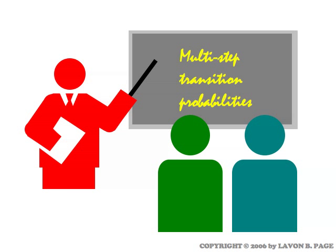So we can have three-step transition probabilities, or four-steps, or ten-step transition probabilities. The basic idea is, if you know where you are at some point, what's the probability you'll be in a certain other state five steps later, or ten steps later, or however many steps you want to specify?